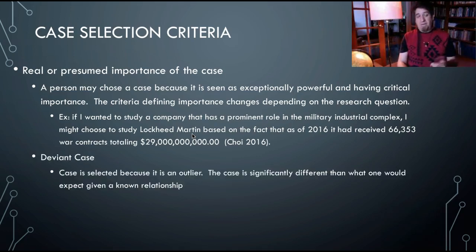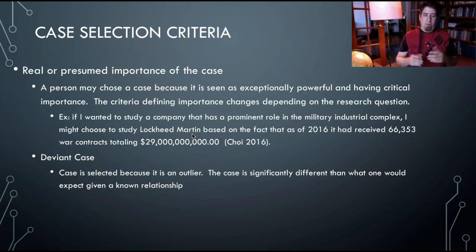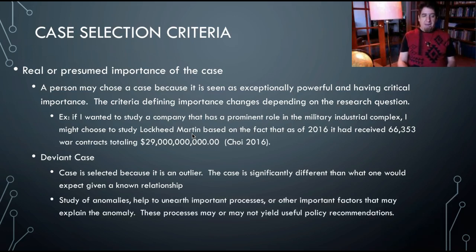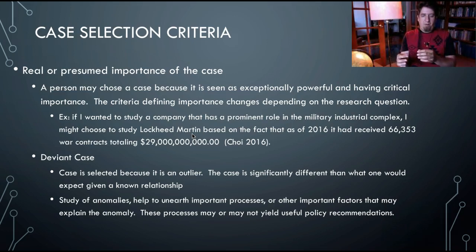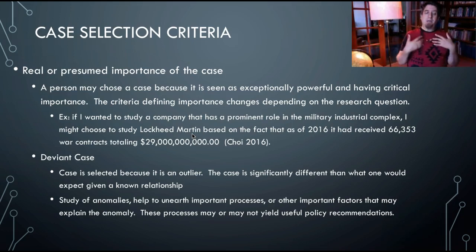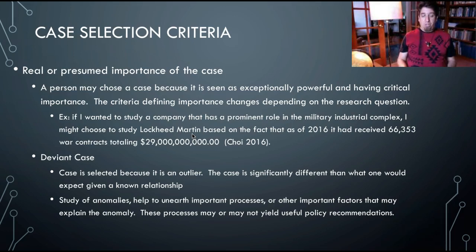I could also select a deviant case — something selected simply because it's an outlier. It's different than what we would expect given a known relationship. For instance, if I see that there is a relationship between gross domestic product per capita and health outcomes, and I see a country which is really poor but does exceptionally well in health outcomes, I might be interested to find out why. This is a form of looking at anomalies, and that can help yield useful policy recommendations sometimes.